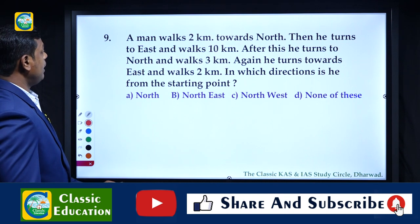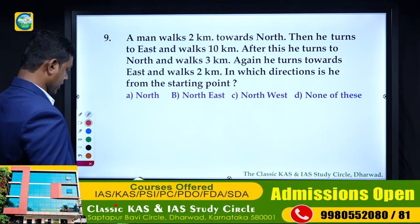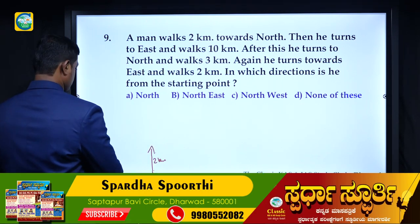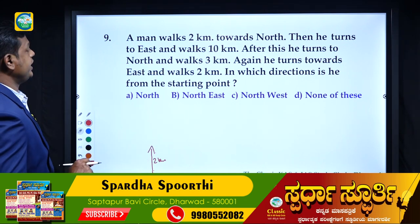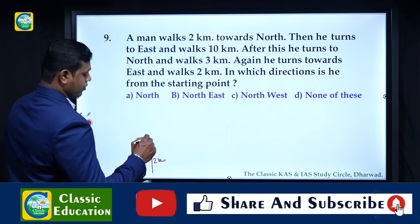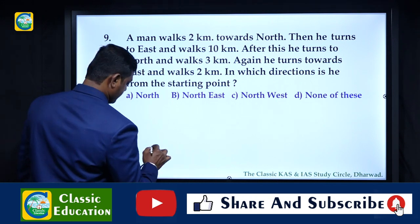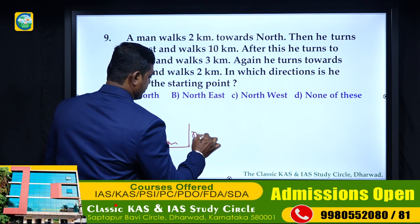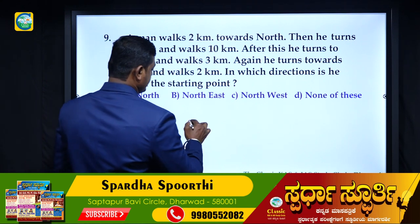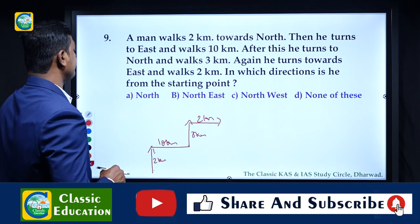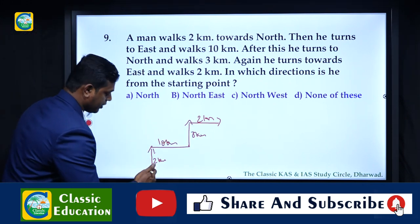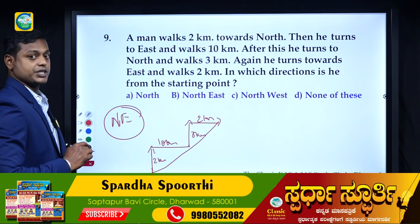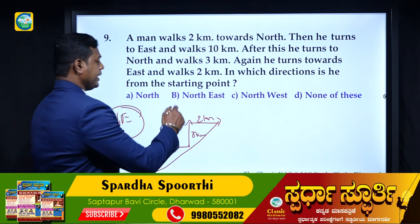Question 9: a man walks 2 kilometers towards north. Then he turns to east and walks 10 kilometers. After this he turns to north and walks 3 kilometers. Again he turns towards east and walks 2 kilometers. In which direction is he from the starting position? The answer is northeast direction. Option number B is correct.